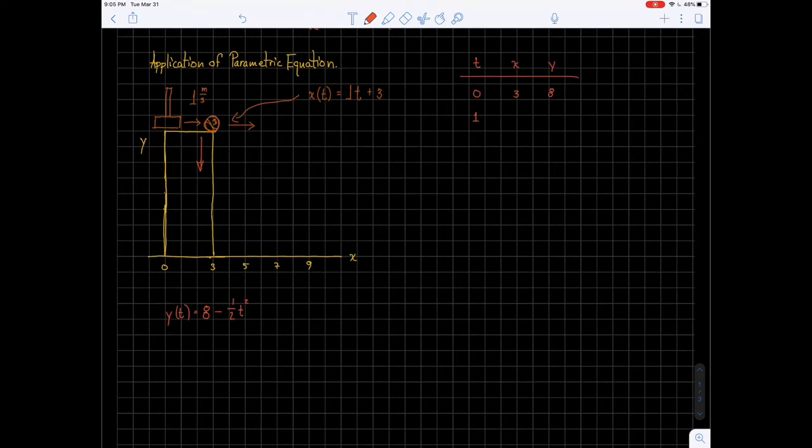Well, after one second has passed, we'll do a little bit of work. So x of 1 is 1 times 1 plus 3, so that's 4. So x becomes 4. And if we do the same for y, y of 1 is 8 minus 1 half times 1 squared. So that's 7 and a half. That's 15 over 2. 7 and a half. Now let's try this again.